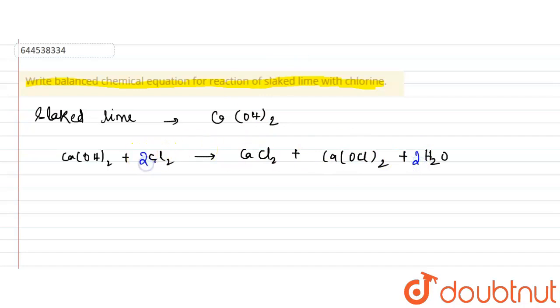And there will be 2Cl₂ and here 2Ca(OH)₂. Now you can see the equation is completely balanced. So what you get as the product? What is this Ca(OCl)₂? This is bleaching powder.